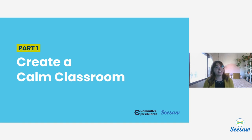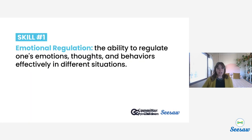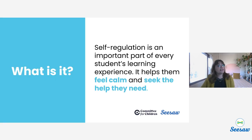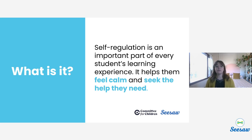We'll begin by discussing how to create a calm classroom and the benefits of doing so. In the world of social-emotional learning, you've probably heard a lot about emotional regulation — the ability to regulate one's thoughts, emotions, and behaviors effectively in all different situations. Emotional regulation is about more than getting students to just be quiet or sit still. When a student has a calm mind, they're more able to focus and pay attention, absorb and recall information, think critically, and succeed academically.